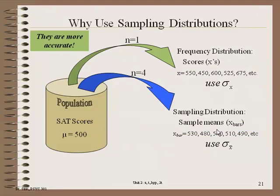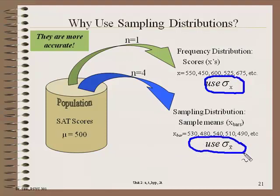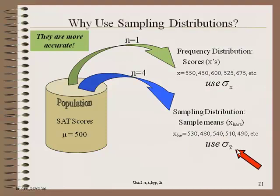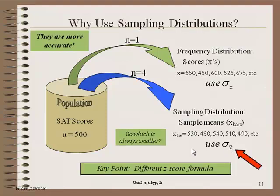Because there are differences in variability, in one case we need to use standard deviation, which we've been using so far, and in the other case we'll need to use a new statistic called standard error. The difference is the X has a bar over it. Here we're looking at variability of X's; here it's the variability of X-bar. Which is always smaller? It's always the standard error that's smaller. The key point is that you're going to need different Z-score formulas.